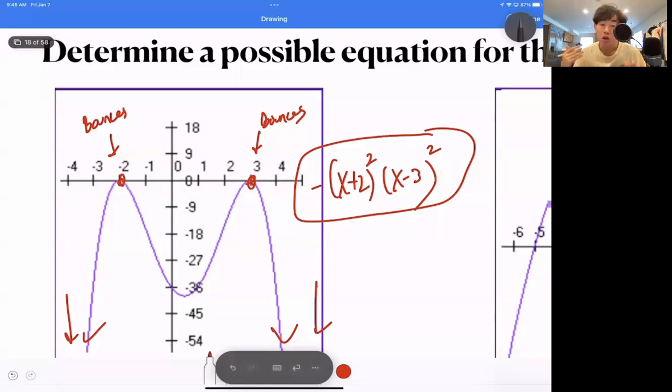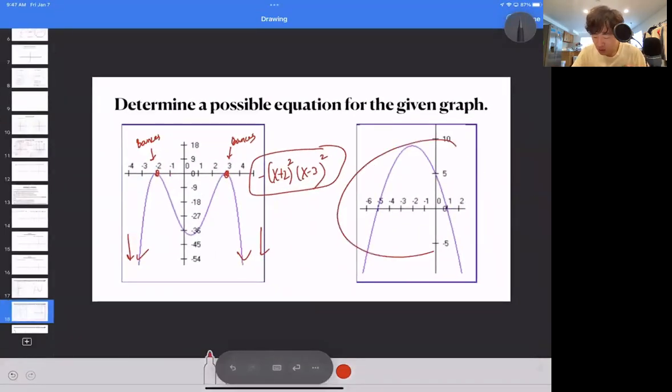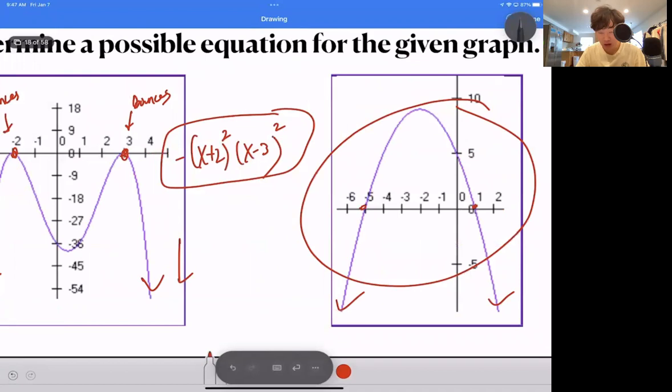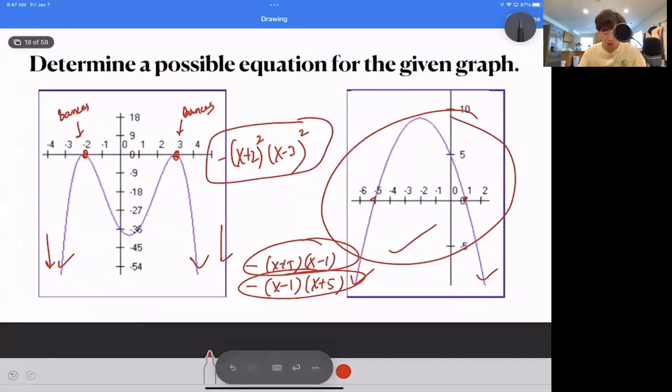This one I think you guys can all do on your own. So just pause the video now and then try to see if you can get this. Okay, so the end behavior is the same as the previous one, and the zeros are at one and negative five. So I hope you have x minus one, x plus five, at negative. Does it matter if I switch up the order? No, it doesn't. Either one of these two will be fantastic.